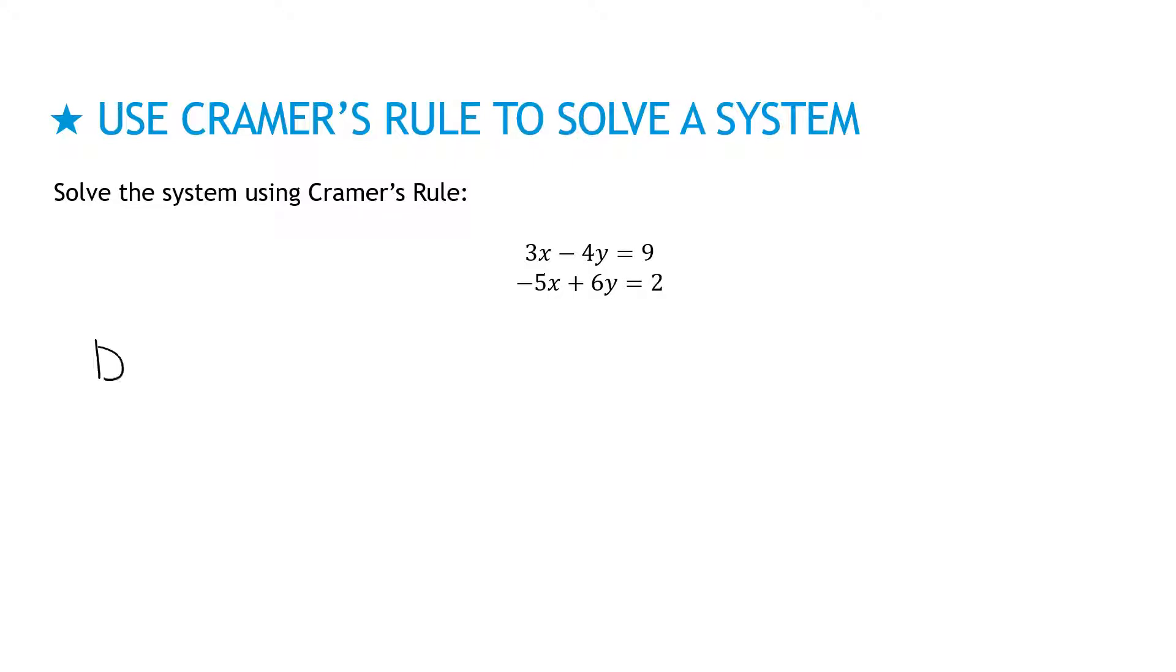I'm going to show it this way again to find D, DX, and DY. D would be three, negative four, negative five, six. That gives me 18 minus 20. 18 minus 20 is negative two.